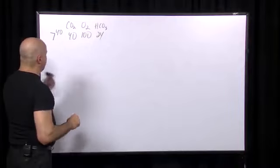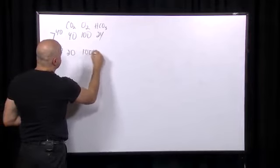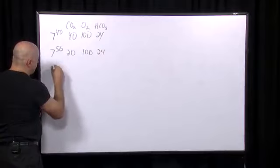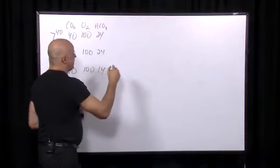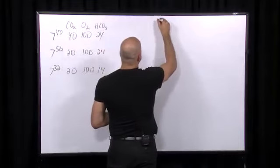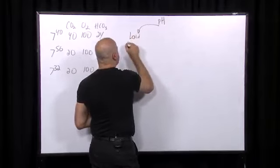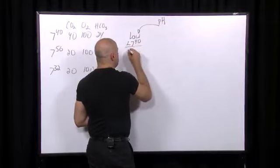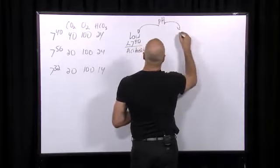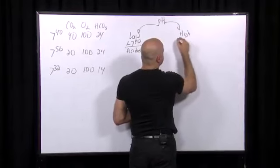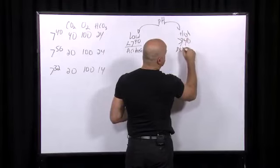The first thing we do when analyzing a blood gas is look at the pH. If the pH is low — less than 7.40 — we know we have an acidosis. If the pH is high — above 7.40 — we know we have an alkalosis.